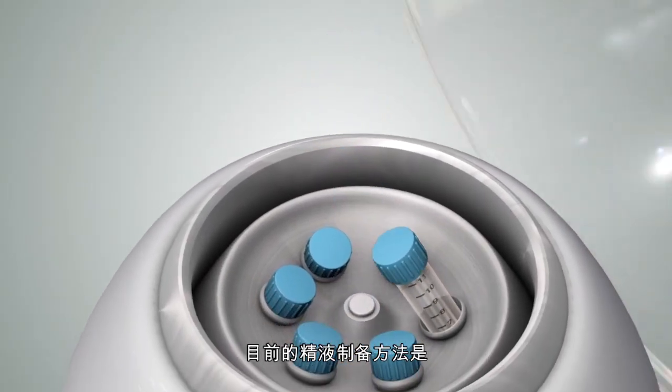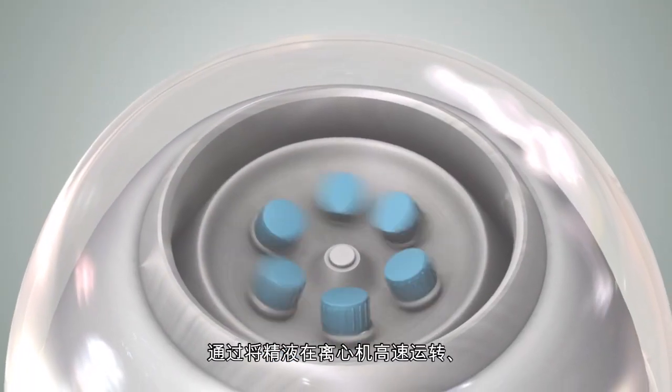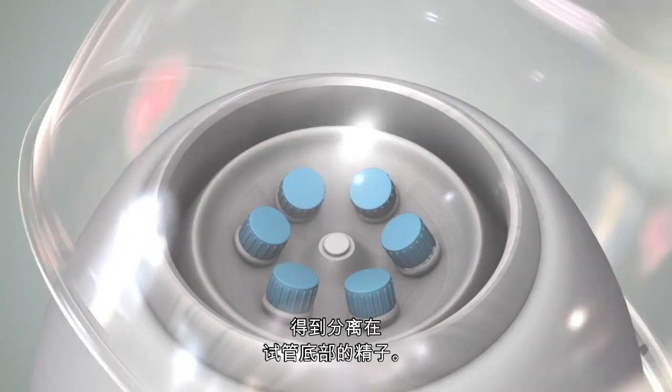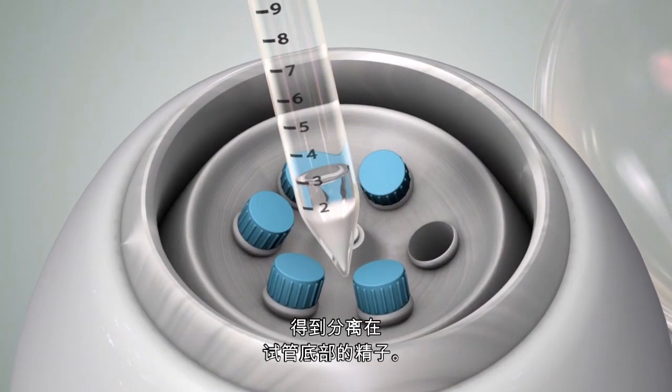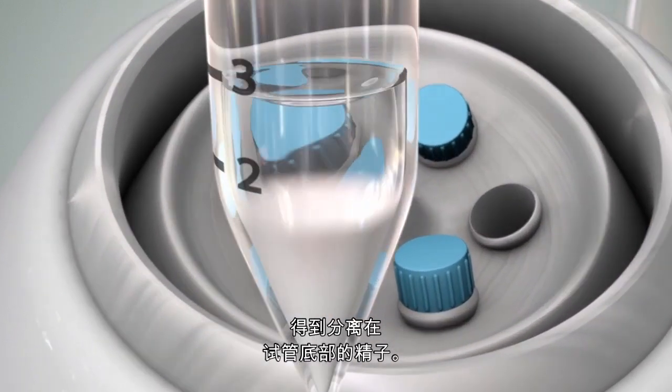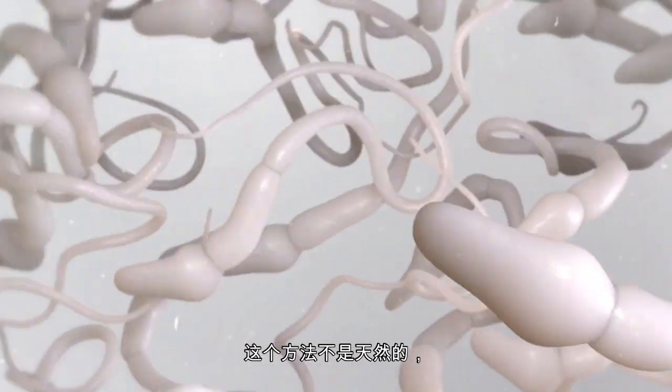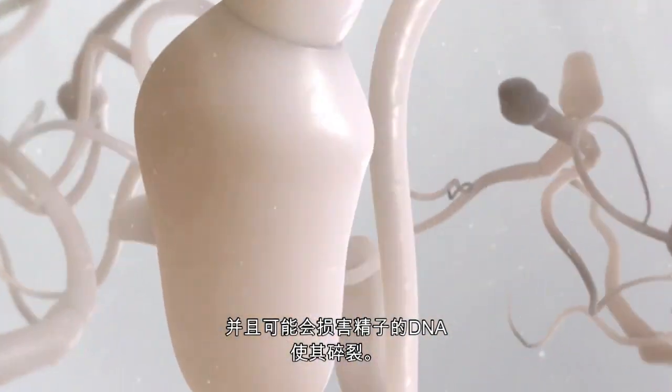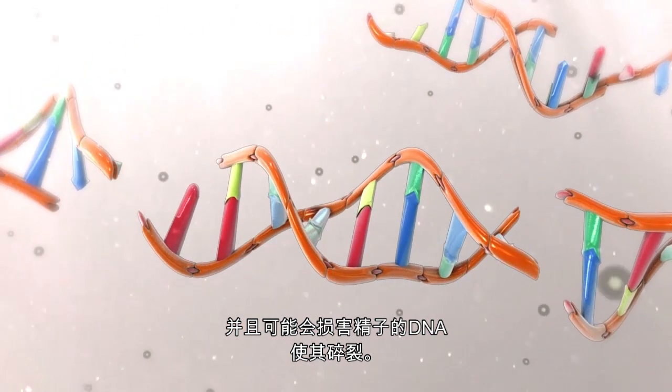Current methods of semen preparation involve high-speed centrifugation of semen in order to isolate a pellet of sperm at the bottom of a test tube. This method is not only unnatural, but may cause the delicate DNA strands to break into pieces.